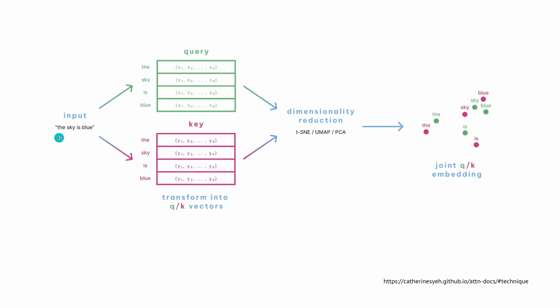You have an input sentence — 'the sky is blue.' You have your query vector, your key vector, and then the Transformer dimensional reduction. We have TSNE, we have PCA, and we have UMAP. Then we get a joint embedded vector space.